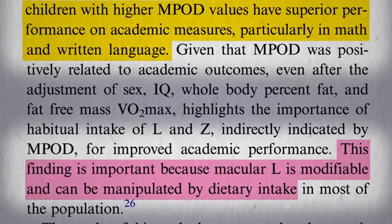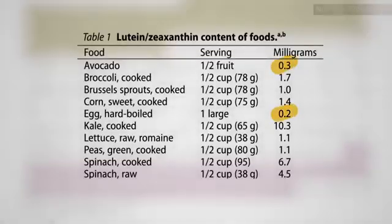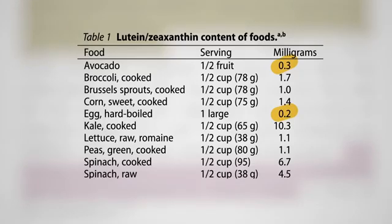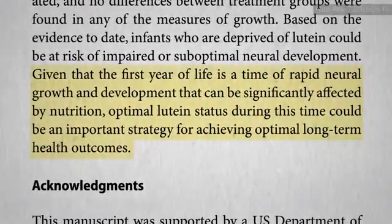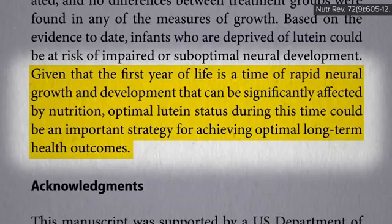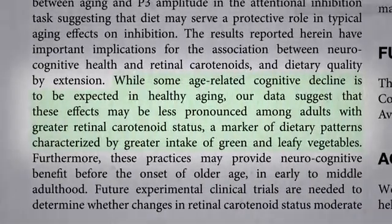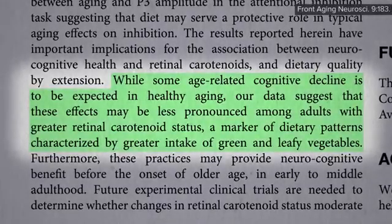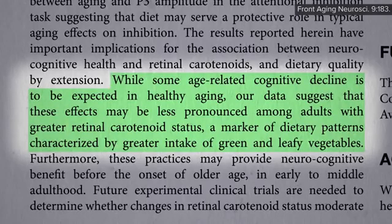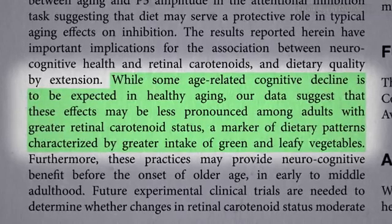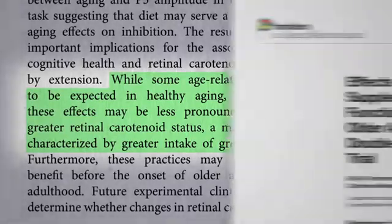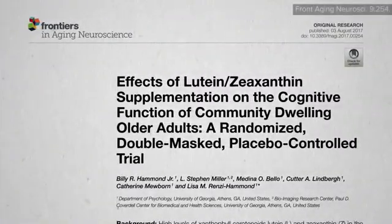So where is lutein found? The avocado and egg industries like to boast about how much of these macular pigments they have in their products, but the real superstars are dark green leafy vegetables. A half a cup of kale has 50 times more lutein than an egg. Pregnant and breastfeeding women should definitely be getting their daily green servings. But it's also never too late — while some age-related cognitive decline is to be expected, these effects may be less pronounced among those eating more green and leafy foods.